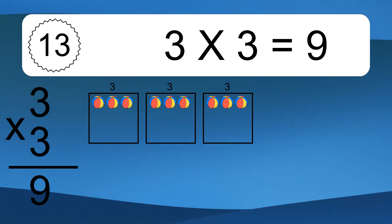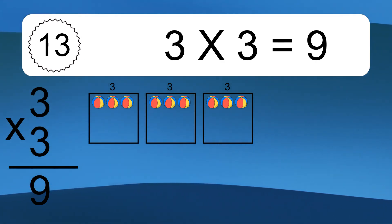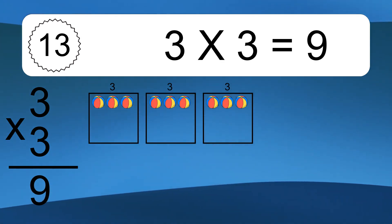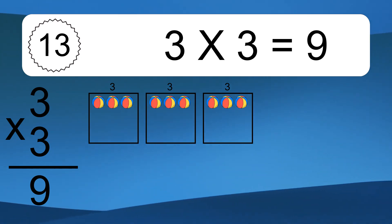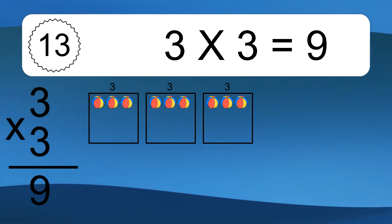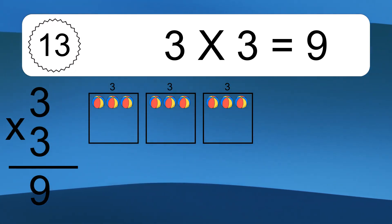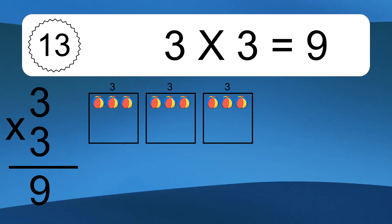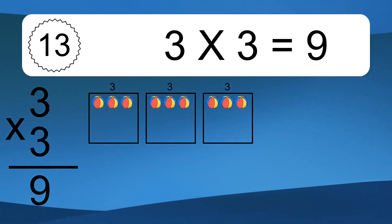3 times 3 equals what? 3 times 3 equals 9. We have 3 boxes, and each box has 3 colorful balls inside. If you count all the balls in all the boxes together, you will have 3 times 3 balls.